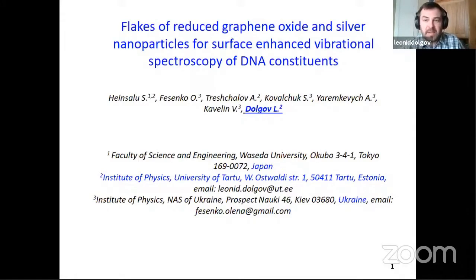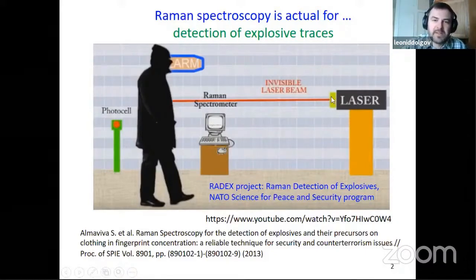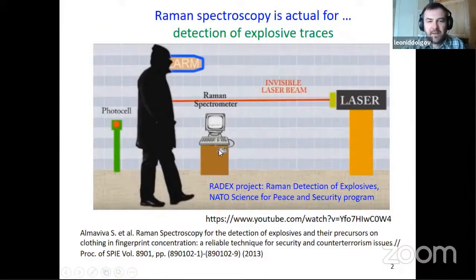There is no doubt that Raman is actual, and just I would like to make some examples of its actuality. Here you can see the system which is aimed at Raman detection of explosives in public places. So, the principle of work is when this guy comes near the photocell, let's imagine that it is potential dangerous guy who has some traces of explosives on the clothes. Then, this photocell switches on the laser, laser comes to the clothes, scattered, and finally scattered light comes to the Raman spectrometer. And if indeed this guy prepared some bomb at home, and inaccurately that these traces of explosives are left on his clothes, then we will see on the spectrometer some characteristic bands of this explosive material.